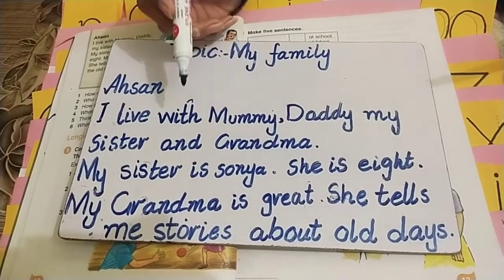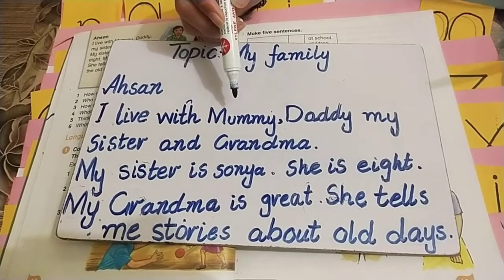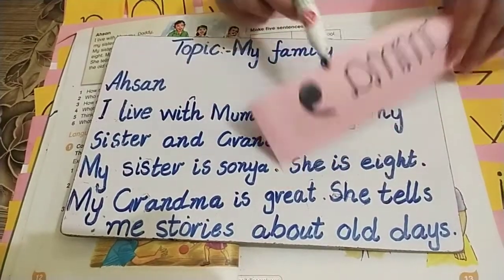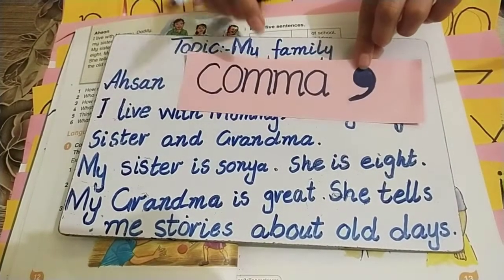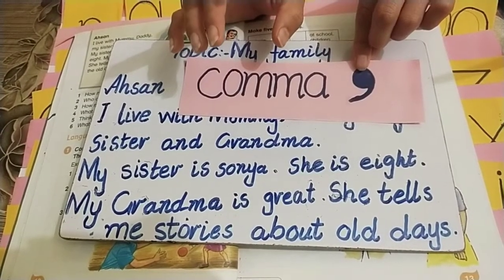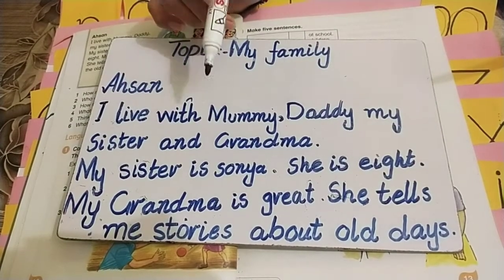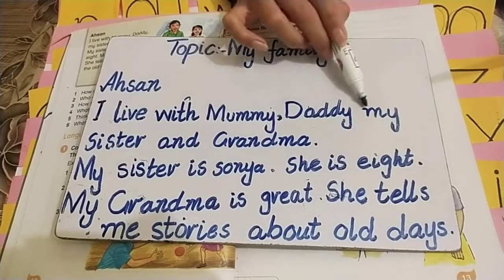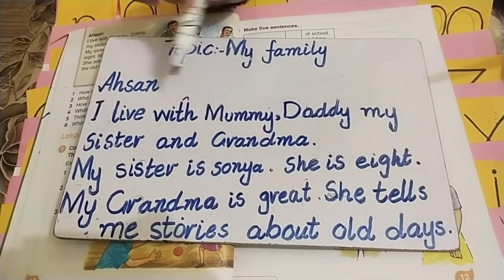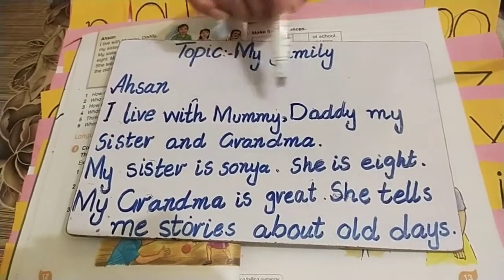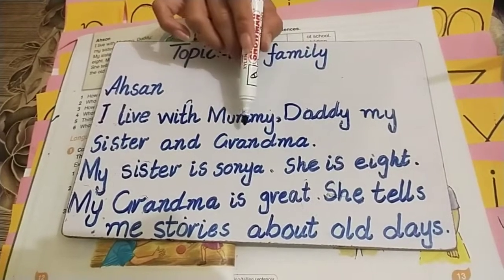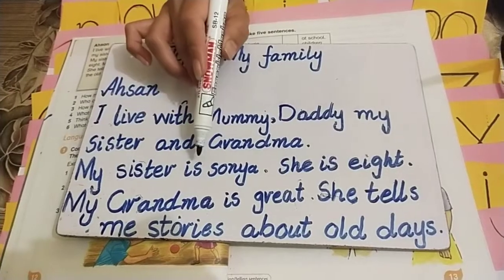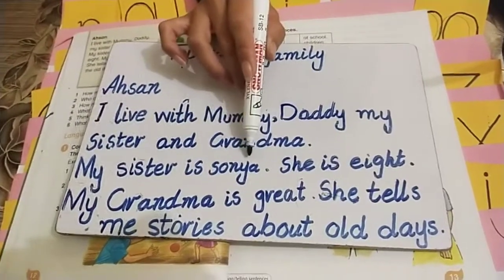Let us note this: when different characters or items are listed, like Mummy and Daddy, they are separated with a comma. So we have read the previous characters — when they listed different items, they used commas to separate them. Here also, a comma is used: Mommy, Daddy, my sister, and grandma.